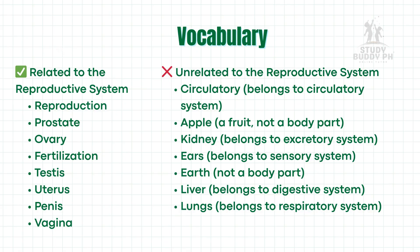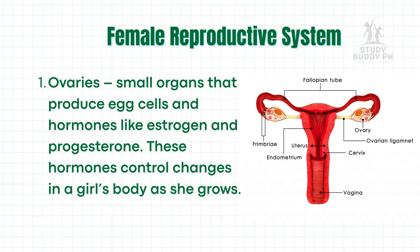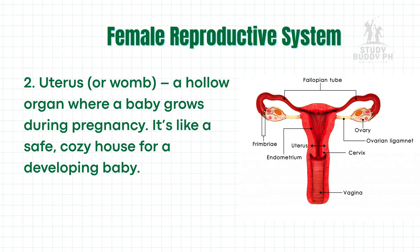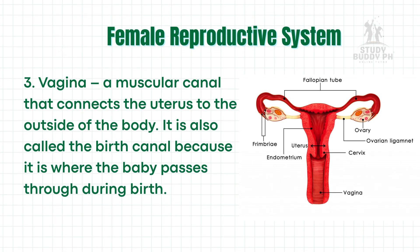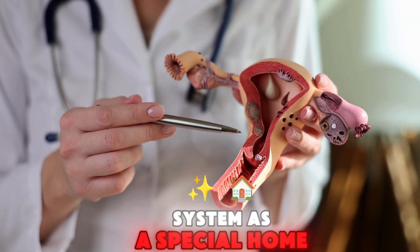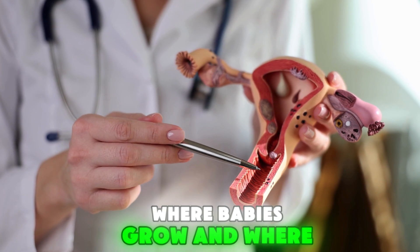The female reproductive system has three main parts. One: ovaries — small organs that produce egg cells and hormones like estrogen and progesterone. These hormones control changes in a girl's body as she grows. Two: uterus or womb — a hollow organ where a baby grows during pregnancy. It's like a safe, cozy house for a developing baby. Three: vagina — a muscular canal that connects the uterus to the outside of the body, also called the birth canal because it is where the baby passes through during birth. Think of the female system as a special home where eggs are kept, where babies grow, and where life begins.